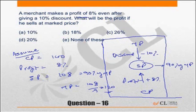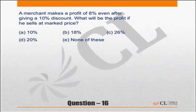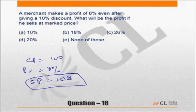This question would have been slightly easier using the answer choices. Again, starting similarly: let cost price equal 100. Since the profit is 8%, the selling price should be 108. That means at a discount of 10%, the mark price should have given a selling price of 108.